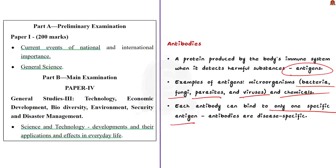Some antibodies destroy antigens directly, while other antibodies make it easier for white blood cells to destroy the antigen. It is important to know that antibodies are disease-specific. For example, if a person has a measles antibody, it will protect only against measles — it won't protect against chickenpox or mumps. Similarly, a coronavirus antibody will protect you against only coronavirus; it won't protect you against HIV.